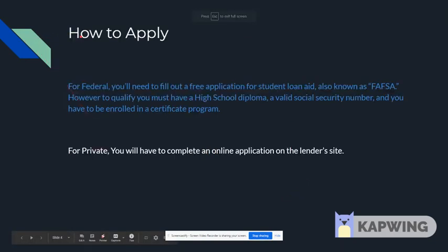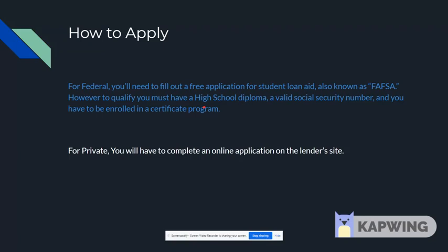How to apply. For federal, you'll need to fill out a free application for student loan aid. However, to qualify, you must have a high school diploma, a valid social security number, and you have to be enrolled in a certificate program. For private, you will have to complete an online application on the lender's site.